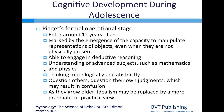The formal operational stage is entered around age 12. It is marked by the emergence of the capacity to manipulate representations of objects even when they are not physically present, the ability to engage in deductive reasoning, and understanding of advanced subjects such as mathematics and physics. Adolescents think more logically and abstractly, question others and their own judgments, and idealism may later be replaced by a more pragmatic or practical view.